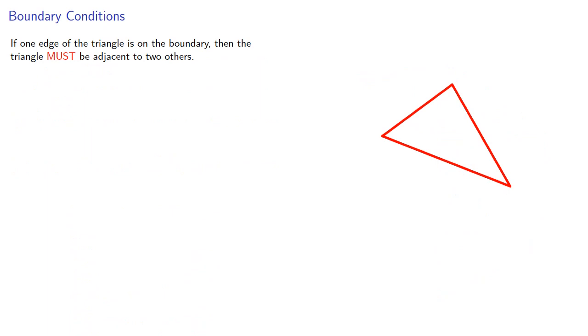In fact, we can go a little further. If one edge of a triangle is on the boundary, then the other two edges must be adjacent to two other triangles. If two edges of the triangle are on the boundary, then the triangle must be adjacent to just one other.